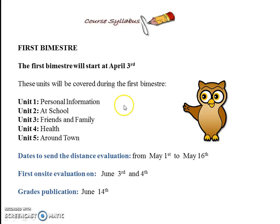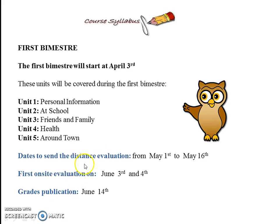This is the information for the first semester. The five units cover topics including personal information, school, friends and family, and how to get around. The dates for the first distance evaluation are from May 1st to May 16th. The first on-site evaluation will be held on the 3rd and 4th of June, and the grades will be published on the 14th.